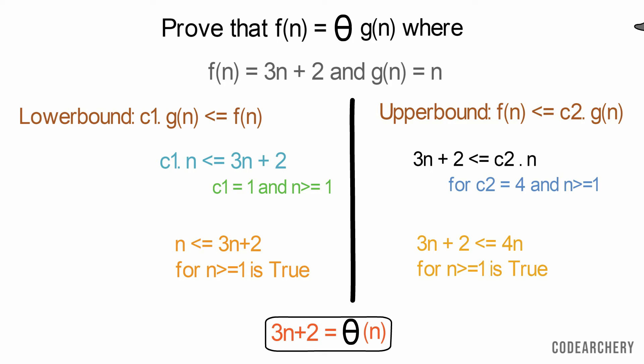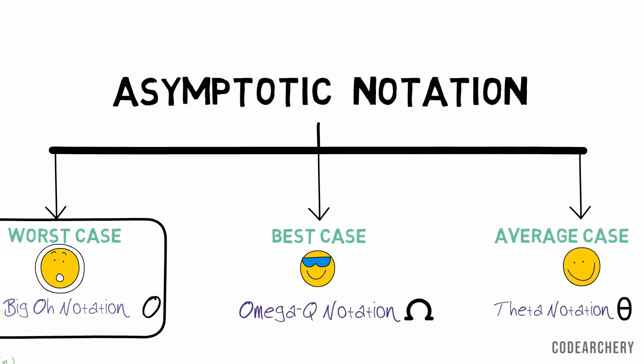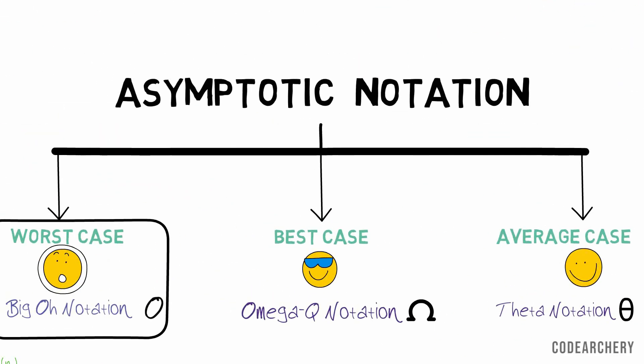Guys, it's absolutely fine and normal if you have not understood these examples. But I hope you have understood that we denote average case by Theta notation, best case by Omega, and worst case by Big O. That's important.